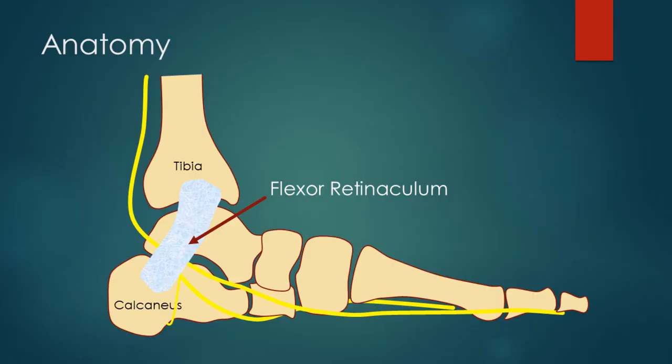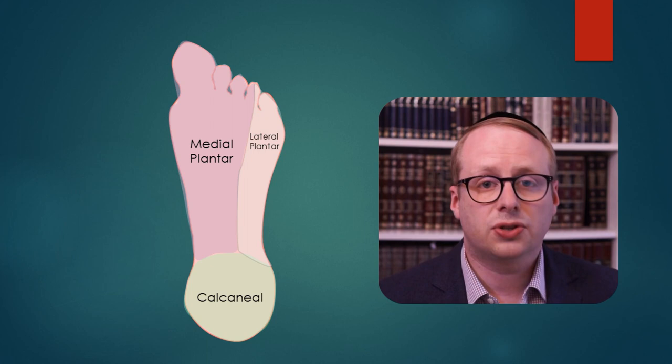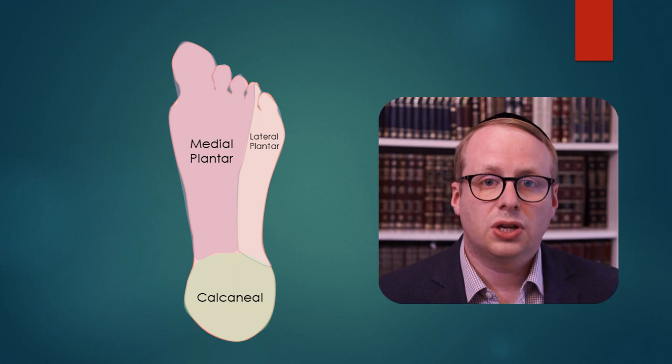Let's have a look at the anatomy. We have a flexor retinaculum which joins the tibial bone to the calcaneus bone, and underneath it runs the tibial nerve which divides into its three main branches. The medial plantar sensory nerve gives rise to sensation from the medial aspect of the foot. The lateral plantar sensory nerve gives rise to sensation from the side of the foot, and the calcaneal branches give rise to sensation from the heel of the foot.